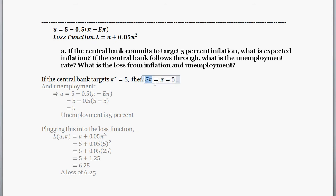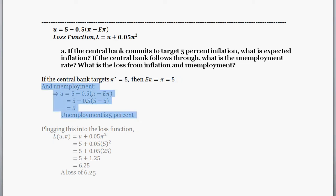Assuming they're successful in implementing that target, realized inflation is also going to be five percent. If the central bank says their target is five percent, in our simple economy people set their expectations in line with that. And assuming the central bank does its job right, actual inflation falls in line. So we'll plug that into our Phillips curve.